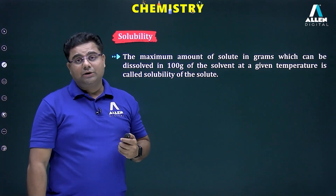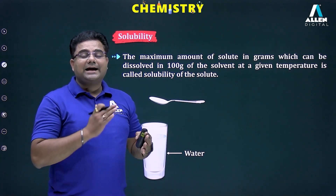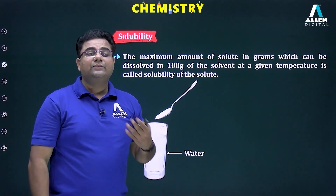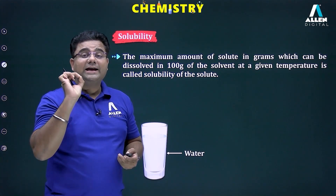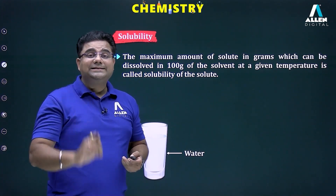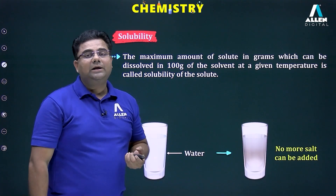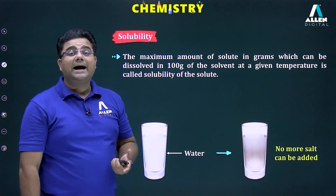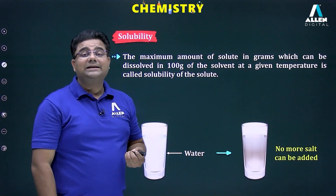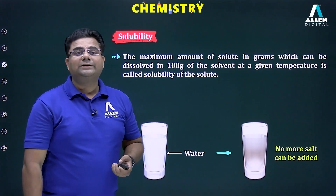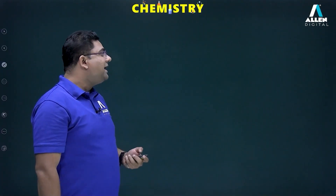For example, if we take 100 grams of water at 20 degrees Celsius and start adding NaCl (sodium chloride), the maximum amount of sodium chloride we can add in this 100 grams of water at 20 degrees Celsius is 36 grams. So 36 grams is the solubility of NaCl in 100 grams of water at 20 degrees Celsius.